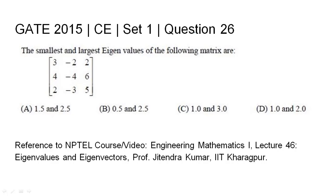GATE 2015 Civil Engineering Set 1, Question 26: The smallest and largest eigenvalues of the following matrix are: 3, -2, 2; 4, -4, 6; 2, -3, 5. The given options are: (A) 1.5 and 2.5, (B) 0.5 and 2.5, (C) 1 and 3, (D) 1 and 2. The relevant NPTEL reference has been listed.